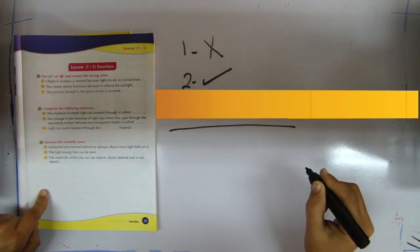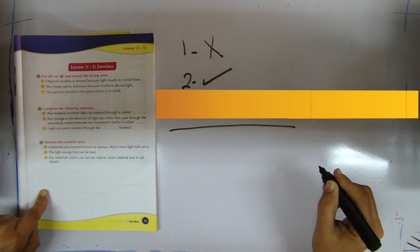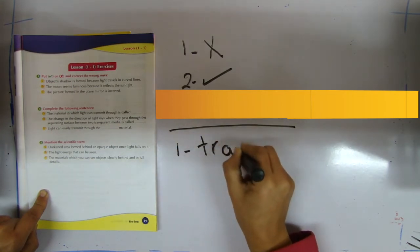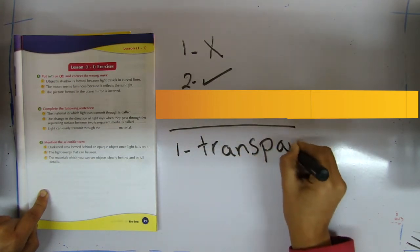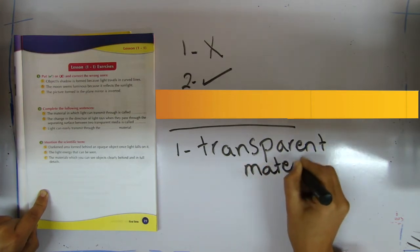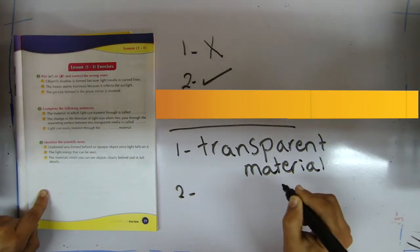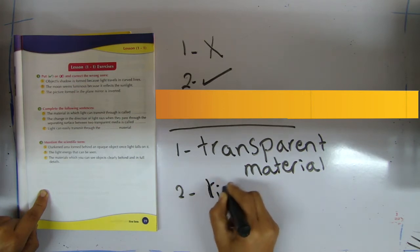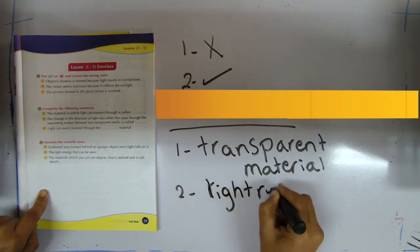Question number two: complete the following sentence. Number one: the material in which light can transmit through is called transparent material. Number two: the change in the direction of light rays when they pass through the separating surface between two transparent media is called light refraction.